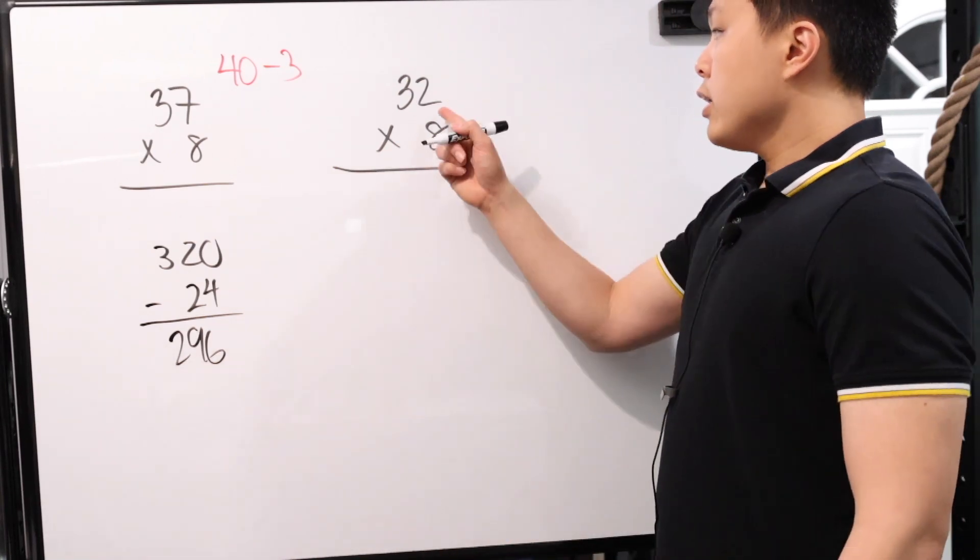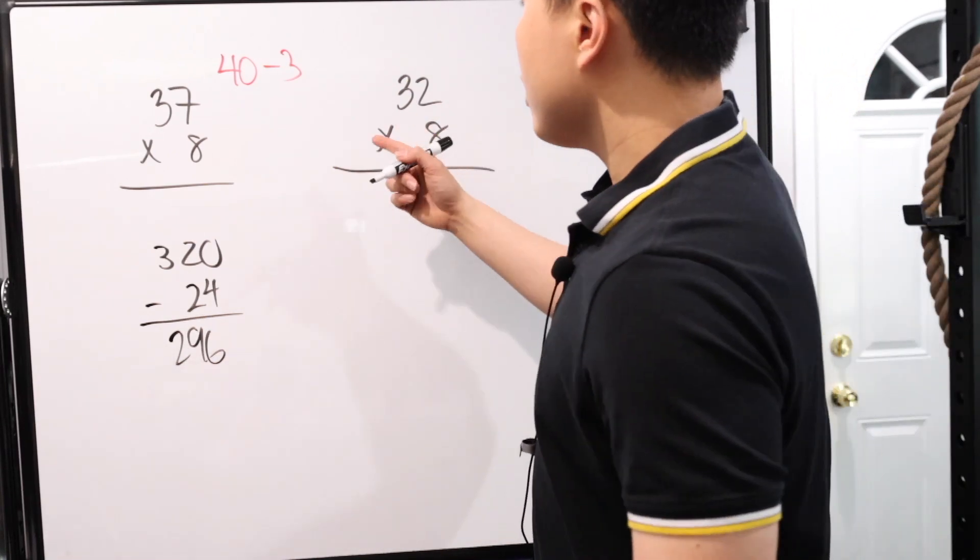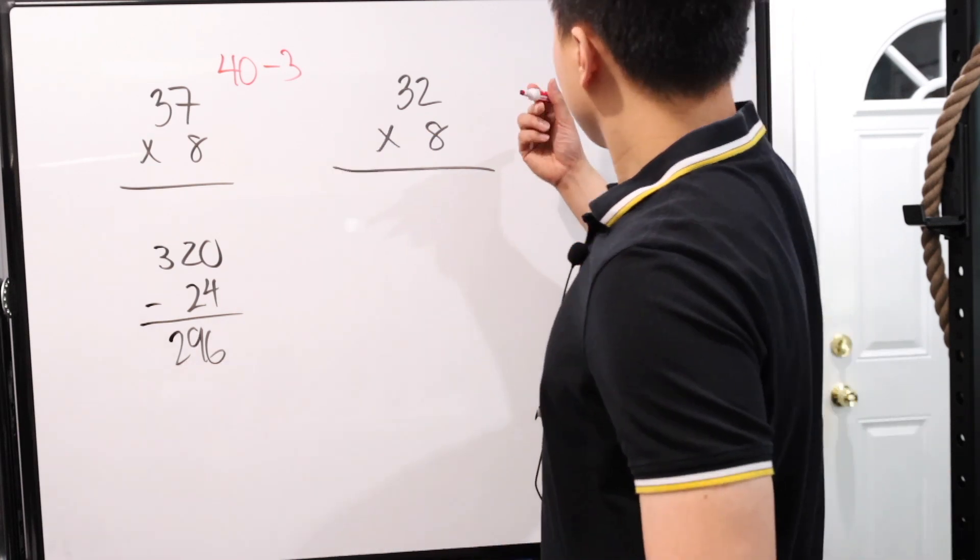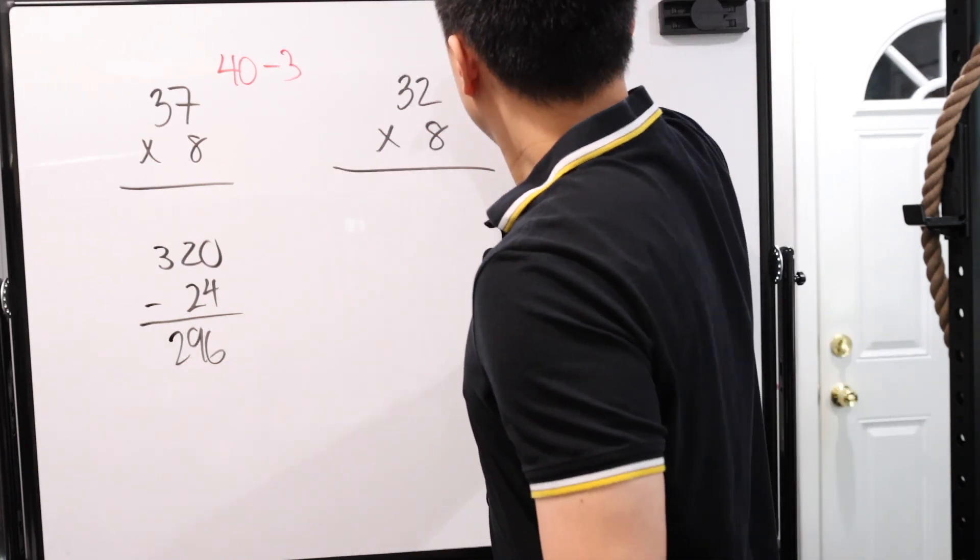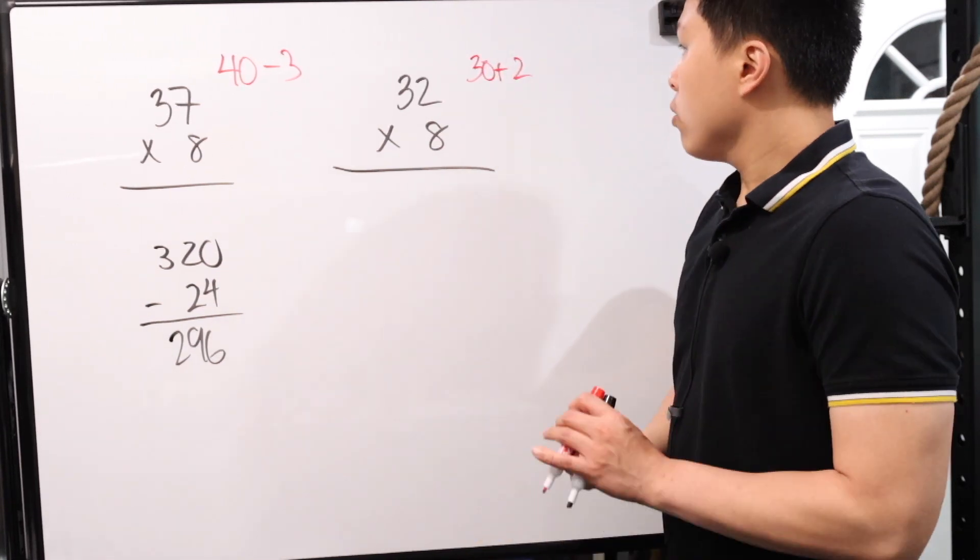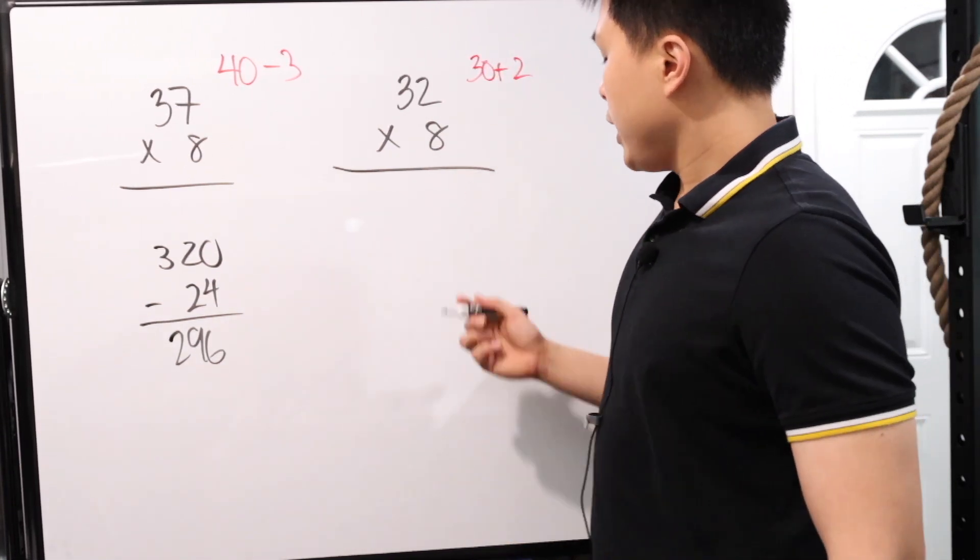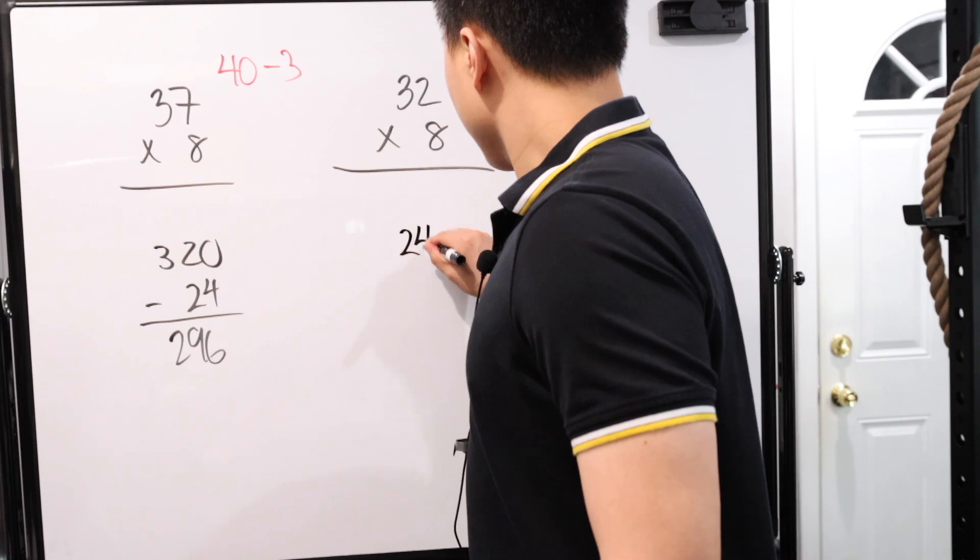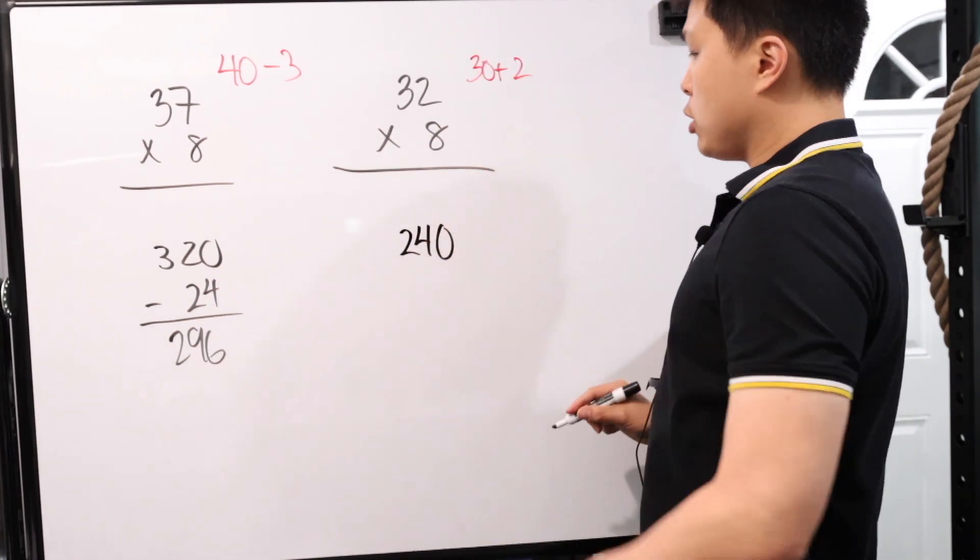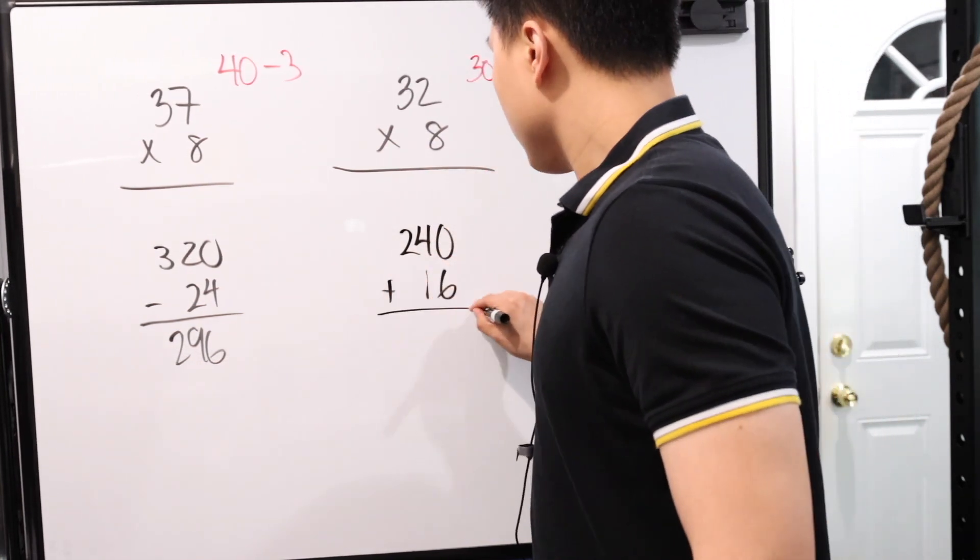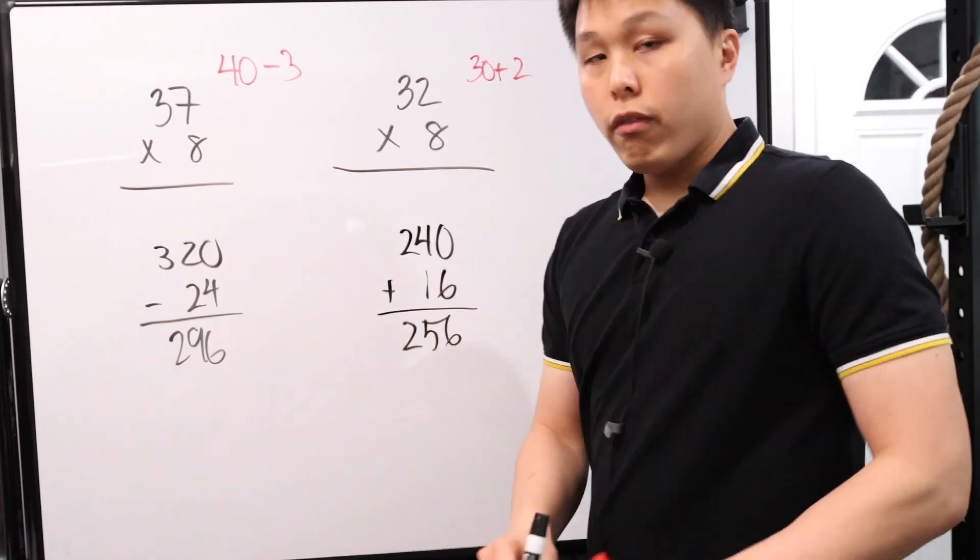This one, this number is less than five. So think of it as smaller adding up. So in this case, it's going to be 30 plus 2. So very easily, 30 times 8, that's 240. And then 8 times 2, that's 16. Add those sides together, 256.